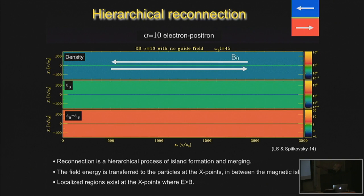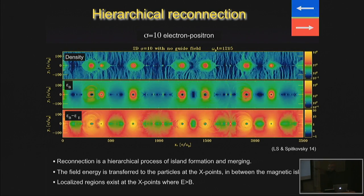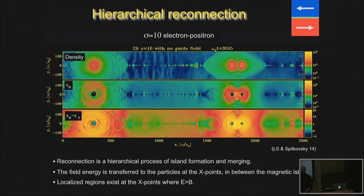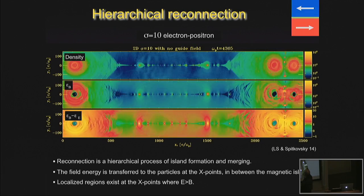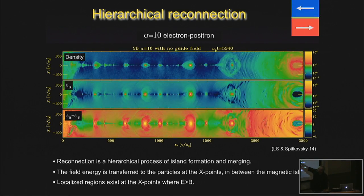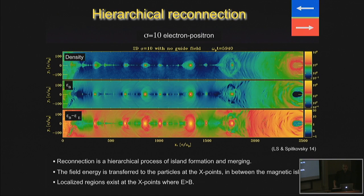We start from a setup where the reconnection region is the central region, with the magnetic field changing direction — pointing left at the top and right at the bottom. As it evolves, the reconnection process is characterized by the formation of islands that have a hierarchical tendency to transition to larger and larger scales and merge. There is also constant production of small-scale islands inside the reconnection current layer. Regions where the electric field is larger than the magnetic field are very good for producing high-energy particles.